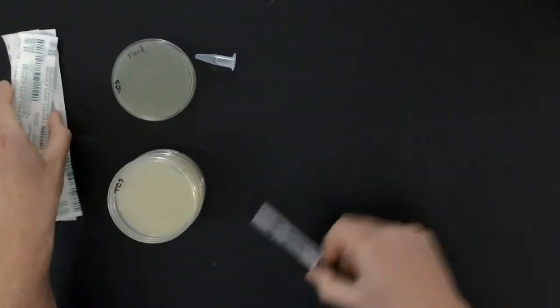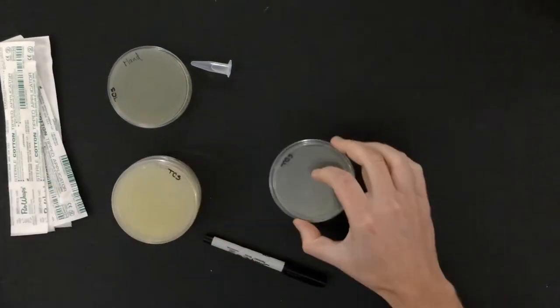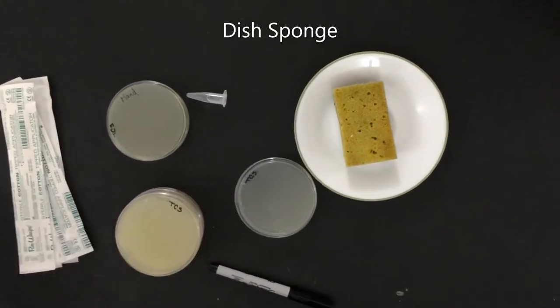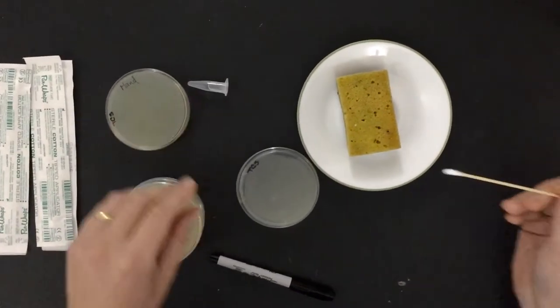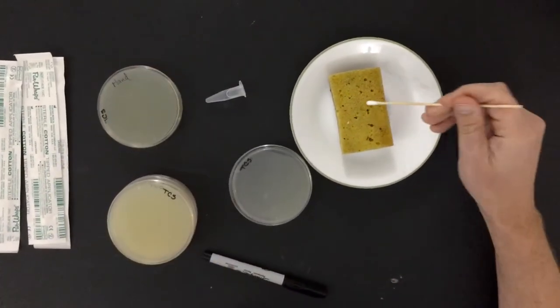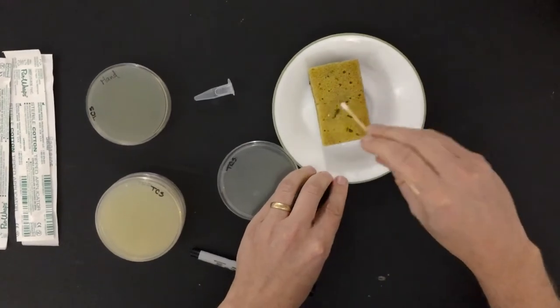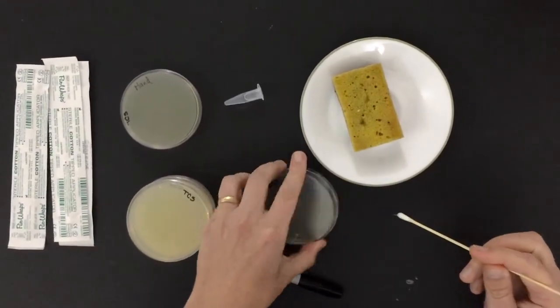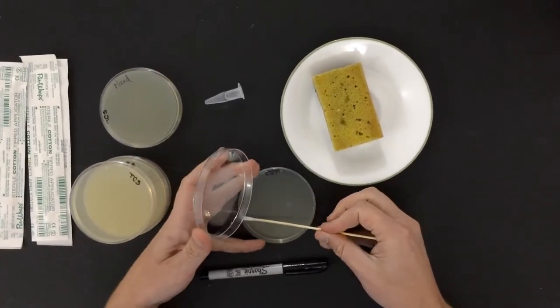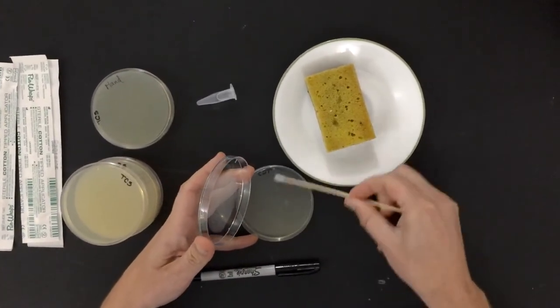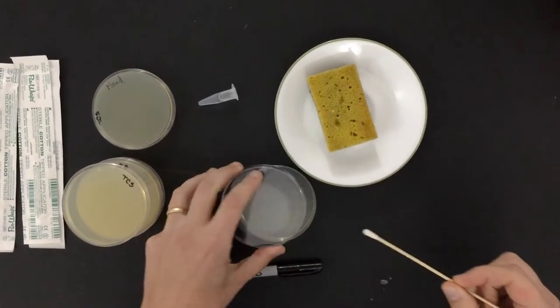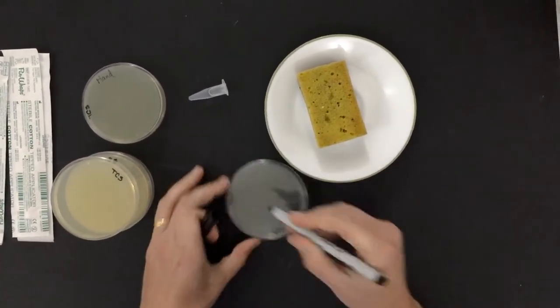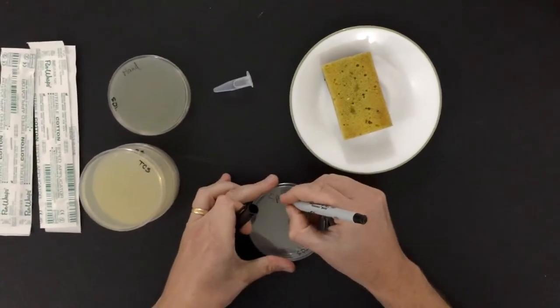There we go. Now I'm going to swab a couple other things. So the second thing I have to swab here is a dish sponge. So this one here, it's already wet. I don't need a little bit of saline solution. I'm just going to squish it. There we go. Smear it across the agar. And there's the second one. So this is sponge.